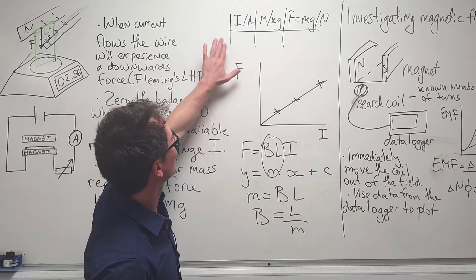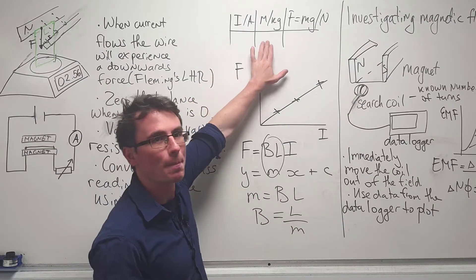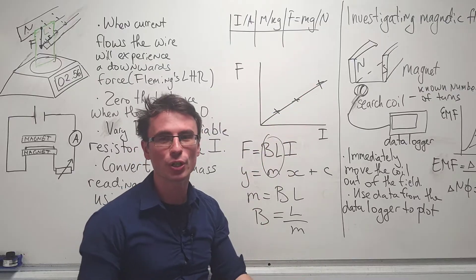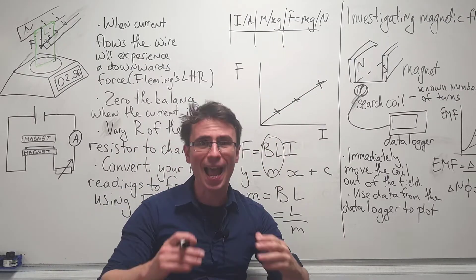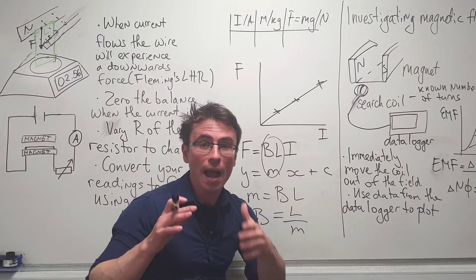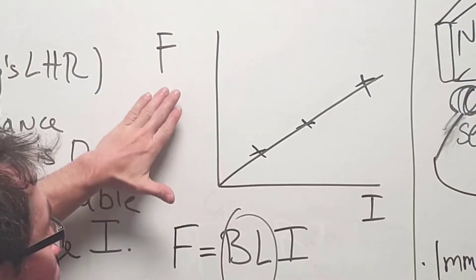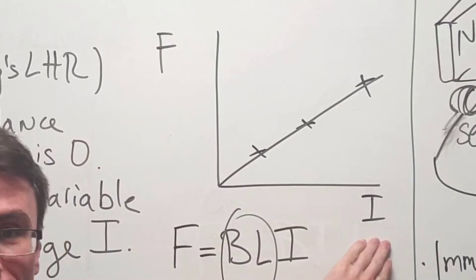Our table of results will look like this. We have the current, we've got the mass, and finally the conversion to the force. As always, we're going to take multiple readings and take the average. After we're done with this, we're going to plot a graph of the force against the current.